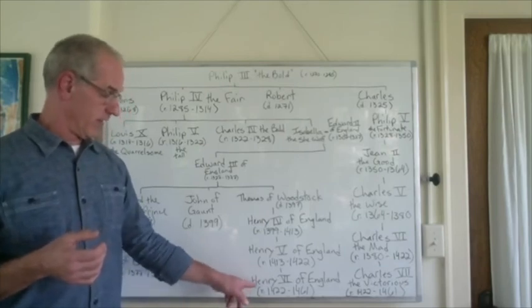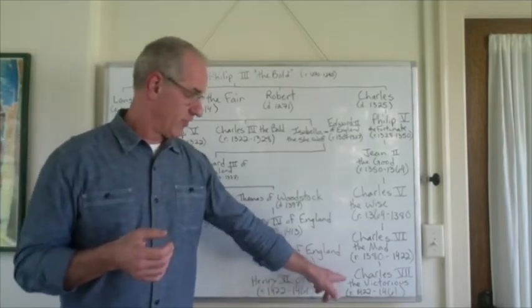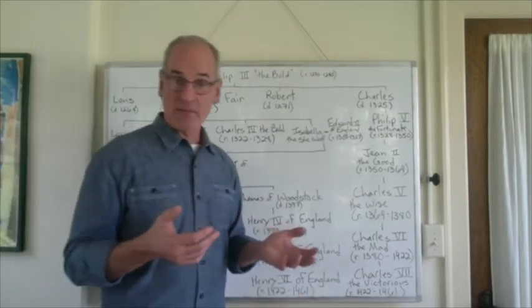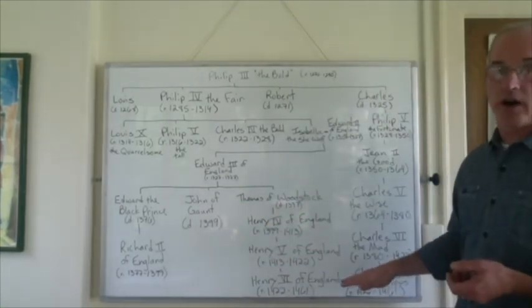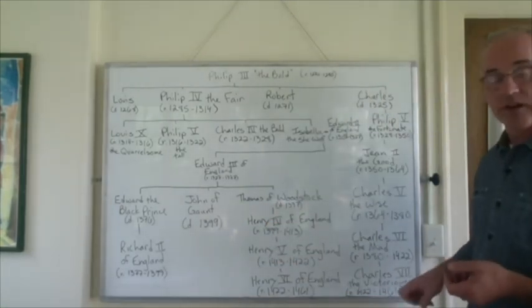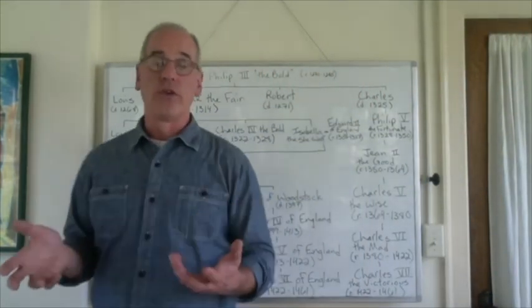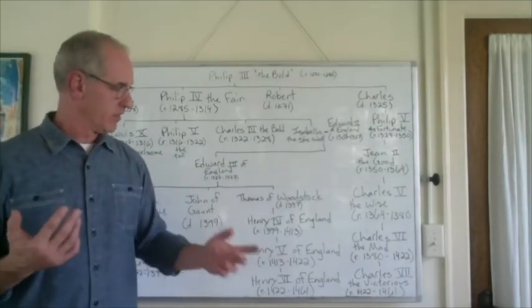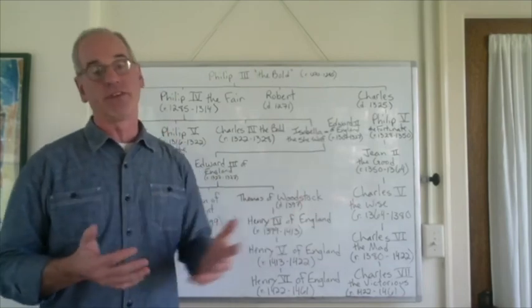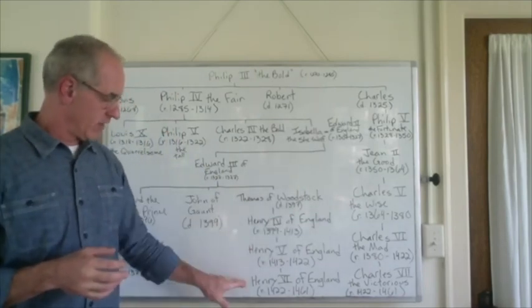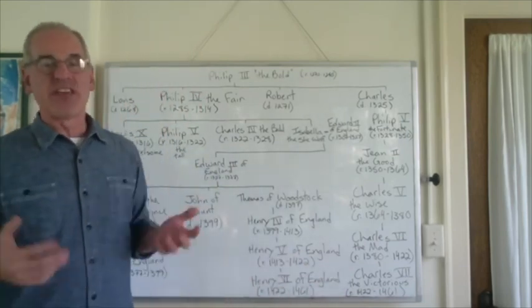But Charles VII at this point says, you know what, I'm king of France, I'm the son of the previous king, and so the fighting goes on, but the real key here is that Charles VII has a weapon in his back pocket that the English don't have, which is Joan of Arc, and so Joan of Arc and a bunch of other things tip the scales, and Charles VII eventually would manage to kick all of the English out of France, and essentially the fighting stops then under the reign of Charles VII, and that's the end of the Hundred Years' War.